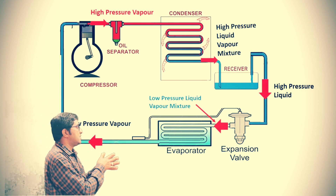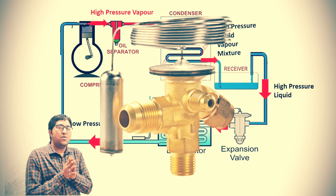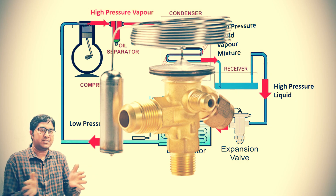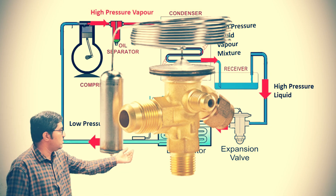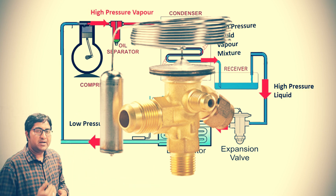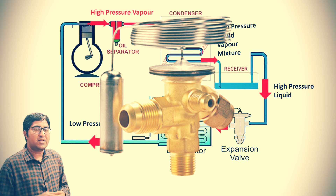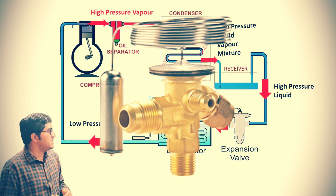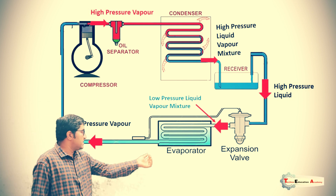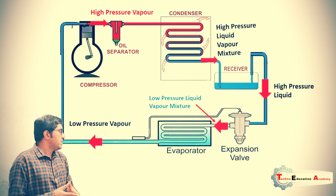This high pressure liquid refrigerant is then supplied to the expansion valve. The function of the expansion valve is to expand this high pressure liquid. Whenever we expand the gas, the volume of the refrigerant increases and the pressure decreases. Since pressure and temperature are proportional, when the pressure decreases, the temperature also decreases.